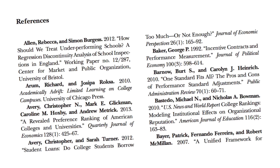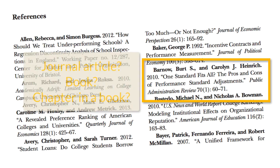An important part of the research process is using citations to track down sources. In order to do this, you need to be able to tell what type of source the citation refers to. Is it a journal article? Is it a book? Is it a chapter in a book?